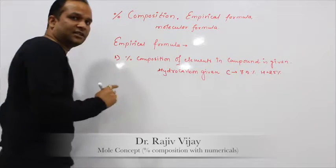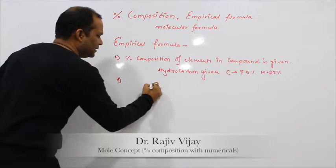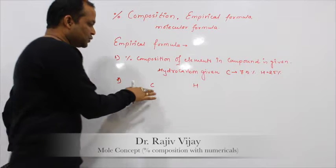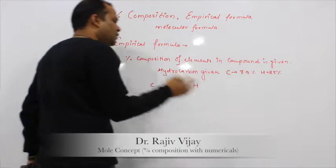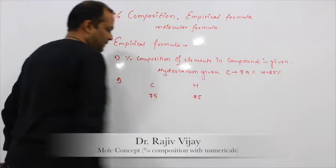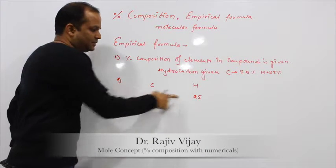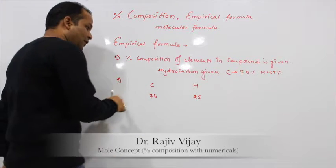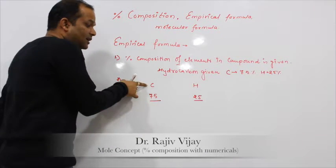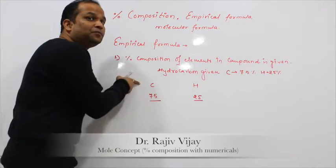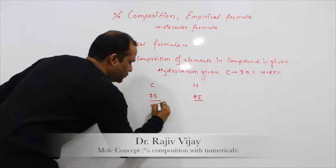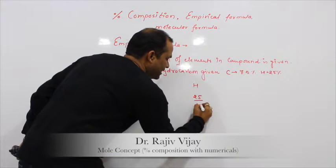Now how can we find out? We have to find out the elements present in the compound — only two elements are present: carbon and hydrogen. Write down their percent composition below each element: 75 below carbon and 25 below hydrogen. The next step is to divide the given percent composition by their atomic weight — remember, not molecular weight.